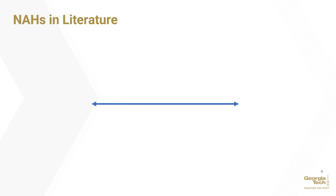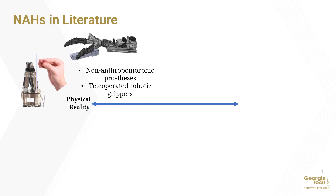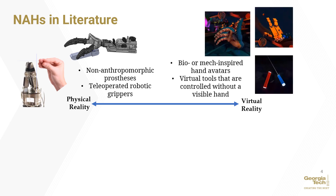We searched the literature to find examples of non-anthropomorphic hands, or NIHs, in research and organize them into the following categories: hands that exist in physical reality, whose control schemes must take real-world physics into account, versus virtual hands that have no such constraints.